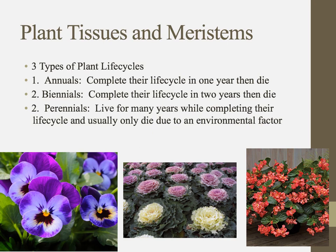There are three basic types of plant life cycles. We have annuals — things like peonies — which complete their life cycle in one year and then die. They've grown, they've reproduced, they've done what they need to do. We have biennials — that prefix "bi" meaning two — things like cabbage plants, which take two years to complete their life cycle and then die. And then we have perennials, like begonias, which can live for many years while completing their life cycle. Perennials are more like animals in the sense that they usually only die due to some environmental factor, with no set time to die.